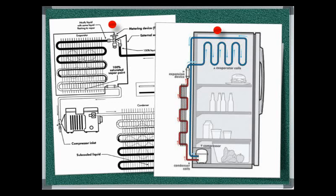The evaporator works opposite to the condenser — here refrigerant liquid is converted to gas, absorbing heat from the air in the compartment. This heat is then carried by the refrigerant from the evaporator as a low pressure gas through a line to the low side of the compressor, where the whole refrigeration cycle is repeated.